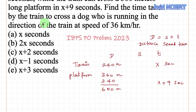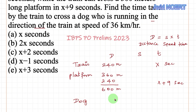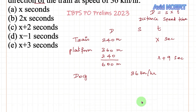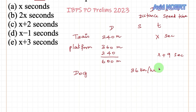From the next sentence, we need to find the time taken by the train to cross a dog running in the same direction as the train. Whenever it is in the same direction, we subtract the speeds. The dog's speed is 36 kilometers per hour. To convert this to meters per second, we multiply by 5/18, giving us 10 meters per second.